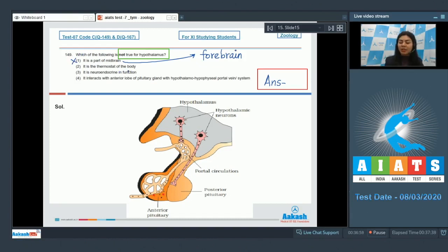Option 2: It is thermostat of the body, that's true. Body temperature is regulated by hypothalamus. Option 3: It is neuroendocrine in function is also correct, as the hypothalamus interacts with the anterior pituitary through the hypothalamic hypophysial portal venous system and secretes releasing or tropic hormones. The only incorrect statement is option 1, which is our answer.